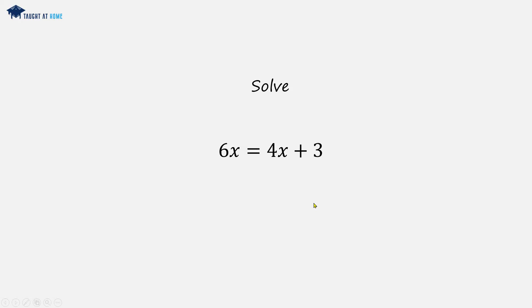And we solve as before. We can take the 4x to the other side by subtracting 4x from both sides. 6x minus 4x is 2x, and the 4x and minus 4x cancel out. We're left with 2x equals 3. Dividing both sides by 2, we get x equals 3 over 2.